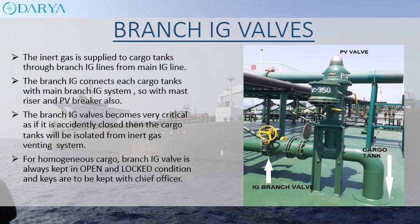Inert gas is supplied to cargo tanks through branch IG lines from the main IG line. The branch IG connects each cargo tank with the main branch IG system, as well as with the mast riser and PV breaker. The branch IG valve is very critical; if accidentally closed, the cargo tanks will be isolated from the inert gas venting system. For homogeneous cargo, the branch IG valve is always kept open and locked, and keys are to be kept with the chief officer.